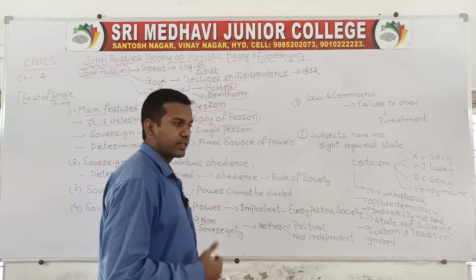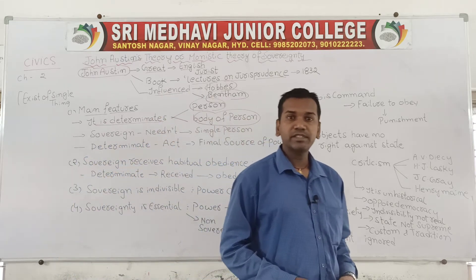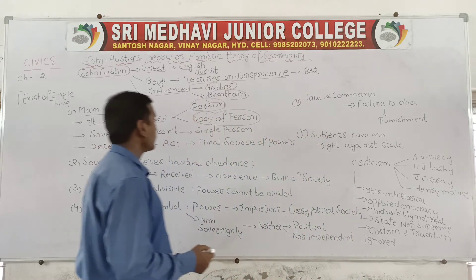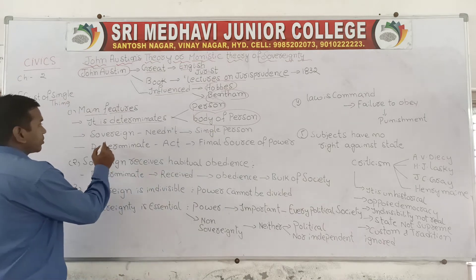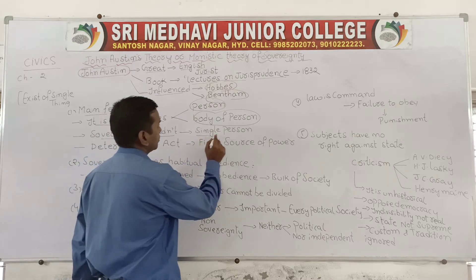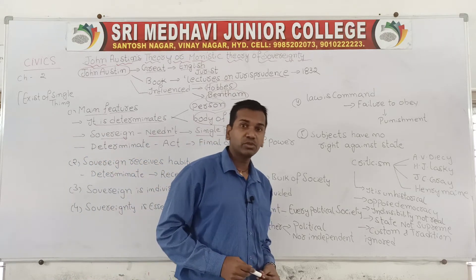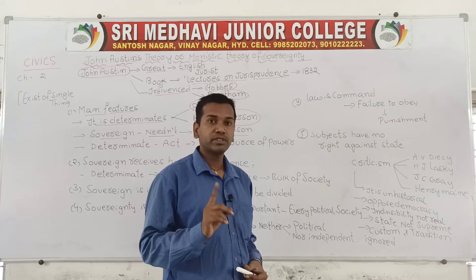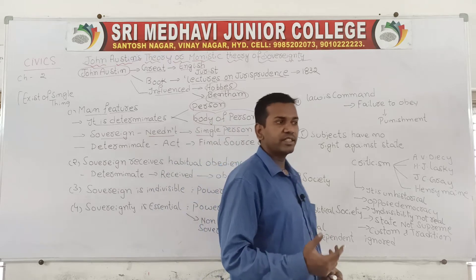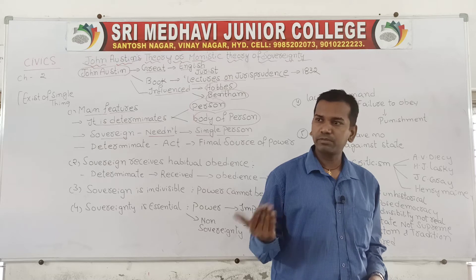The theory makes clear that power should lie under the control of the state only and sovereignty should lie under the control of the state. Second point: sovereignty need not be under the control of a single person. It should be under the control of the state, but sovereignty should not be under the control of one person — either a person or a body of persons.